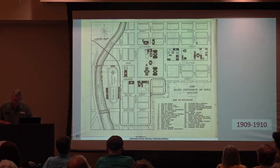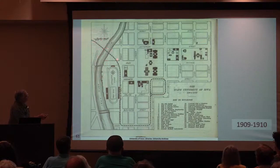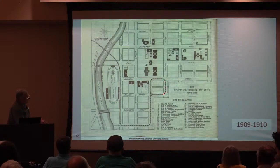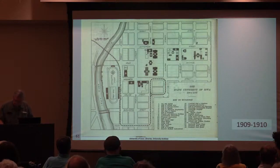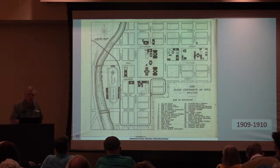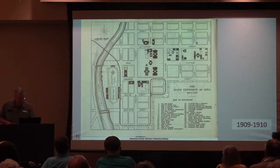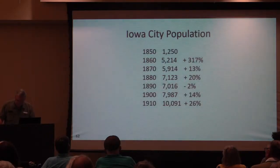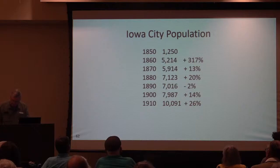This is a 1909-1910 campus map showing the route of the CRANDIC — the Cedar Rapids and Iowa City Railroad — that came down across the river along the back side of the stadium and made its loop around what is today Old Capitol Square, or the Old Capitol Mall. Also on this map, nine buildings are now shown on the Pentecrest. The population figure for 1910 shows that the decade of the 1900s had the largest percentage increase since that of the 1850s.